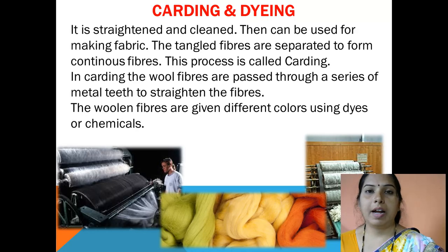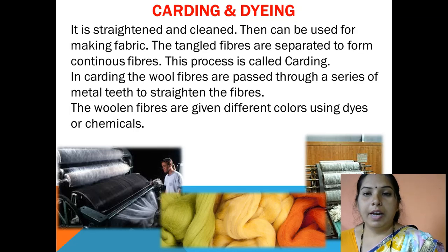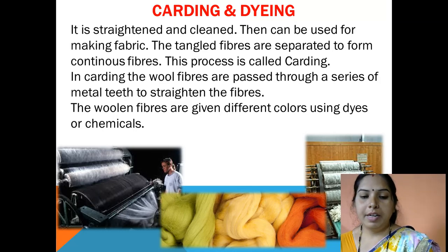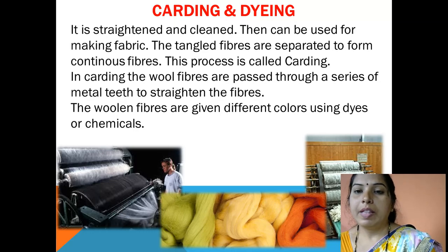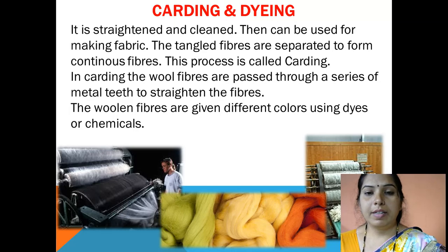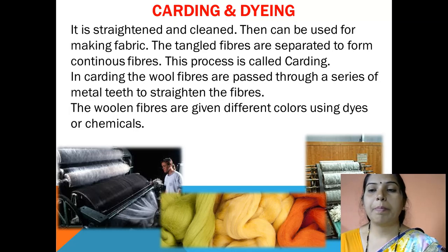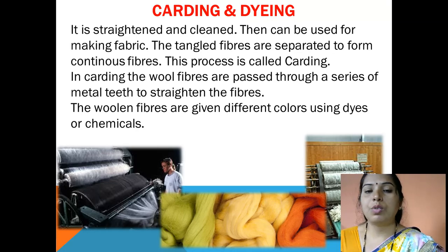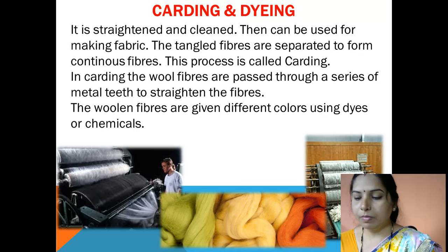The next step is carding and dyeing. The fleece is straightened and cleaned before making fabric. The tangled fibers are separated into firm continuous fibers — this process is called carding. In the carding process, the wool fibers are passed through a series of metal teeth to straighten them. The wool fibers are then given different colors using dyes or chemicals.